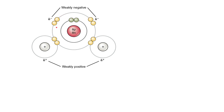that means the oxygen side of the molecule is more likely to be negative in charge, while the electrons being less likely to be found around the hydrogen part of the molecule means that the hydrogen portion is more likely to be positively charged.